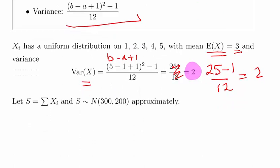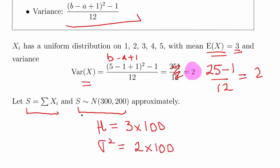When we sum up our 100 observations—S is the sum of 100 observations, one, five, three, and so on—we expect the mean to be 300, which is 3 times 100, and we expect the variance there to be 2 times 100.